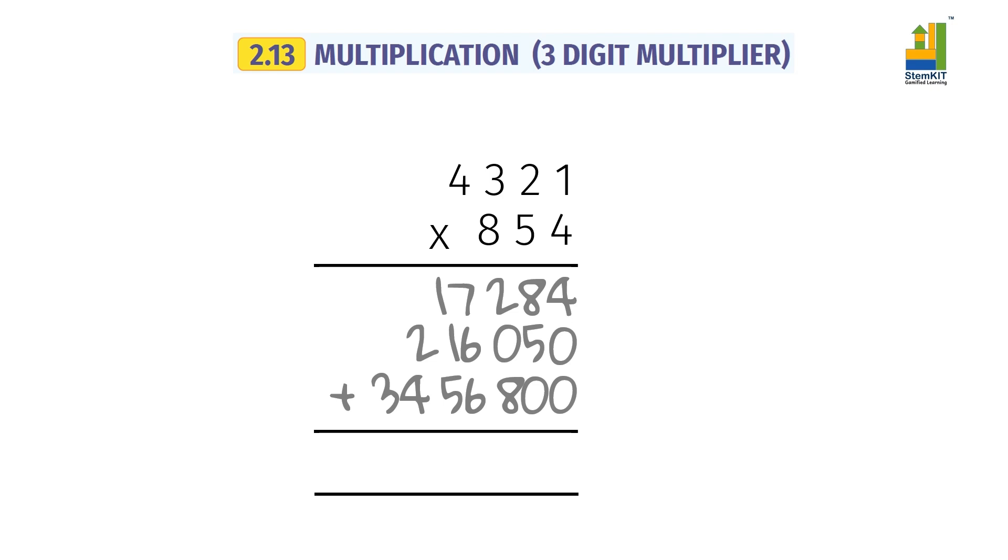Now, we add the 3 rows. The sum is the product: 3,690,134.